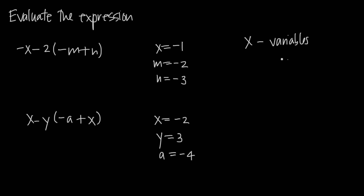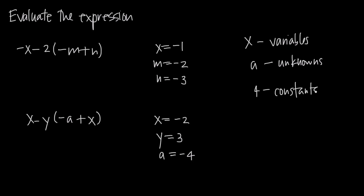Any other letters in our expression that are not like x and y, but for example are like a, b, m, n — things like that — those are usually called unknowns. And then the other thing we're going to have, other than variables and unknowns, are just whole numbers like this negative 2 we have in here. And those are going to be constants.